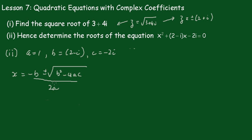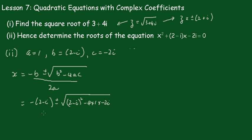Substituting in, we get: minus (2 minus i) plus or minus the square root of (2 minus i) all squared minus 4 times 1 times minus 2i, all over 2 times 1, which is 2.